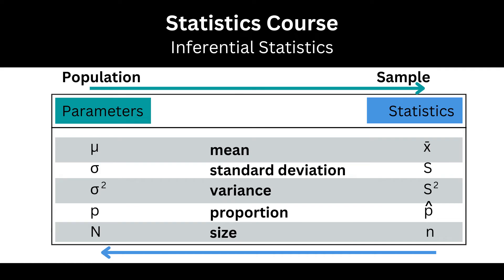From the sample we call these sample statistics, the equivalent to the population parameters. Here it's sample mean, sample standard deviation, sample variance, and so on. Notice how the letters are different.